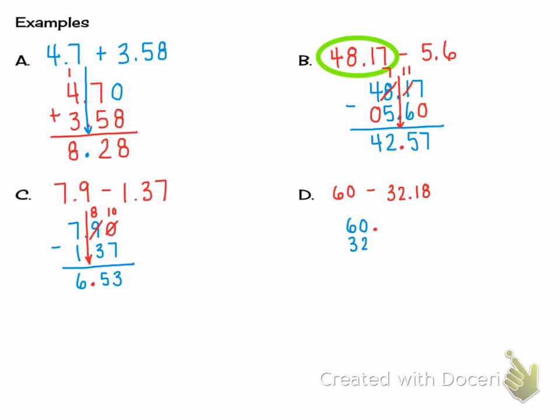So I can write the 32 and 18 hundredths there. And then you have to remember to write your zeros above the 18 hundredths so they go to the same place value. Now remember it's top minus bottom. So all of these are 0 minus 8, 0 minus 1, 0 minus 2. And that makes it kind of tough. So we have to borrow all the way over from the 6.